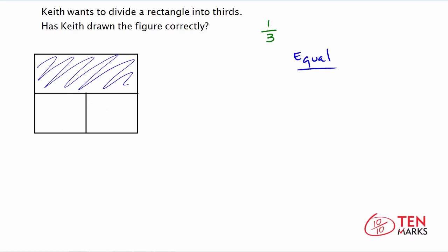What Keith would have to do is take a rectangle and divide it into three equal parts. Let me show you that figure.